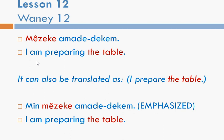Look at the second example on this page: Min Mizaka amada dakam. The only difference is that we've added min in front of the same sentence. Min Mizaka amada dakam. The only reason min is here is for emphasis — you emphasize what you're saying by adding an extra pronoun. Mizaka amada dakam: I am preparing the table. And the previous one with min is also: I am preparing the table — just with added emphasis.